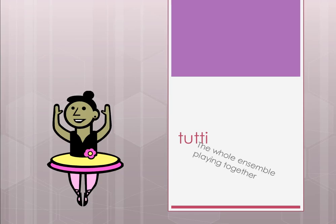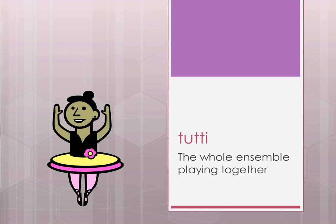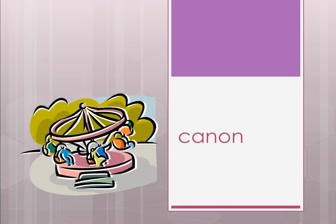Tutti — the little tutu is just a memory device — means the whole ensemble playing together. So if an orchestra starts with just strings, then woodwinds enter, then brass, then percussion, and they're all playing together, that's tutti. Finally, a canon is a round with different entry points — like a merry-go-round where each person enters at a different point but goes round in the same motion.